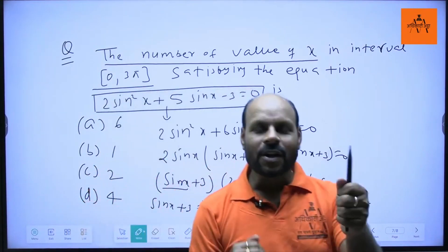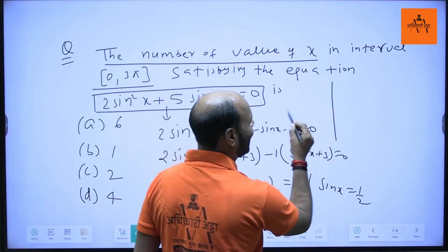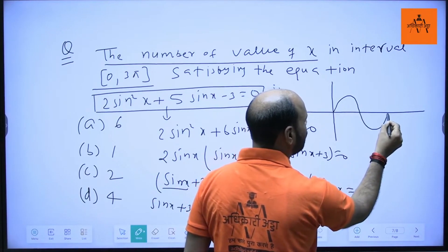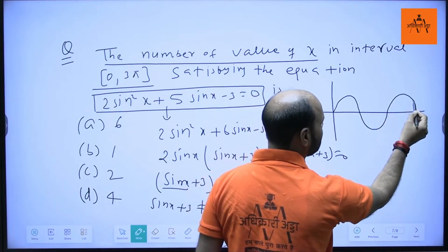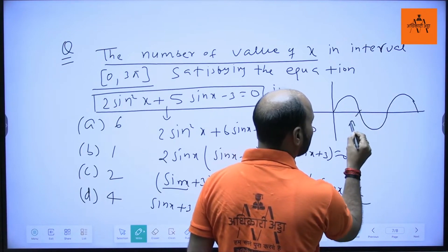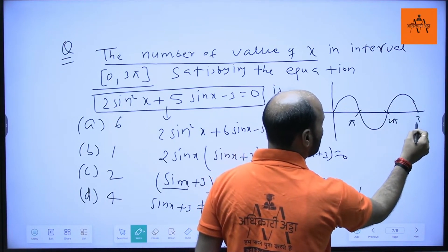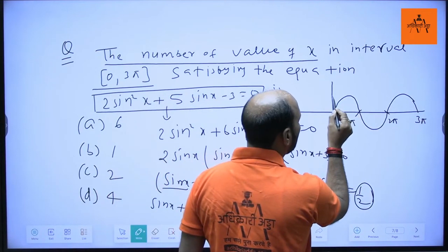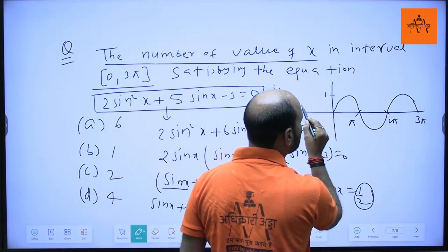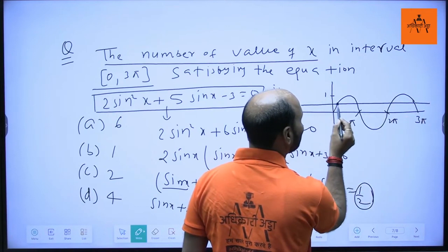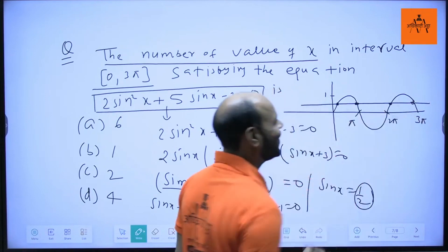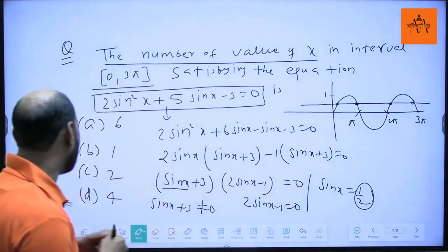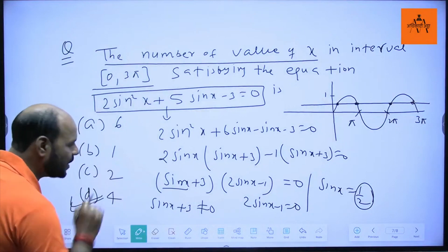Now draw the graph of sin from 0 to π, π to 2π, and 2π to 3π. The line y = 1/2 is just below 1. Counting intersections: 1, 2, 3, 4 times. So the number of solutions is 4. Option D is correct.